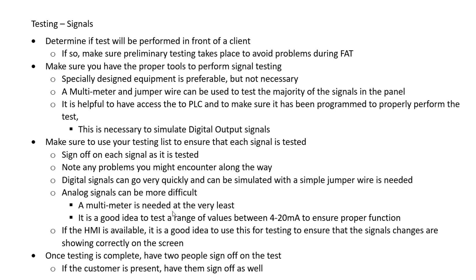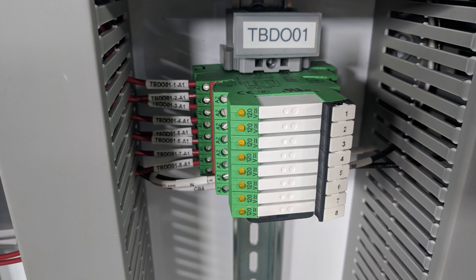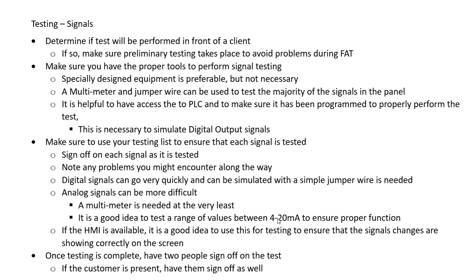Because we also have output signals to measure, this is where we'll need access to the PLC. We'll want to connect to it and measure digital output signals as well as analog output signals. With the analog output signal, you'll need a multimeter as well. With digital output signals, if you're using interposing relays as we do on our panels, you can simply listen for that audible click in the relay to confirm that you're sending that output signal.